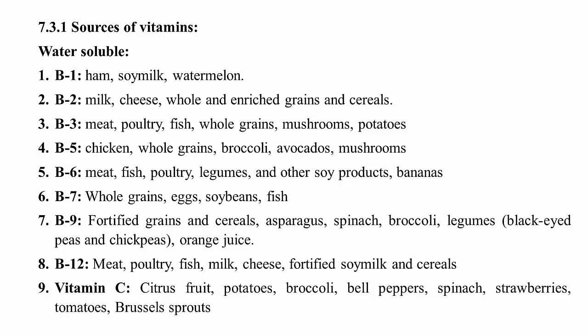For vitamin B3 deficiency, the sources include meat, poultry, fish, whole grains, mushrooms and potatoes — all these contain large amounts of this vitamin. For vitamin B5, we can get it in large quantity from chicken, whole grains, broccoli, avocados and mushrooms. Mushrooms are especially good for B5, so increase your intake of mushrooms as far as vitamin B5 is concerned.